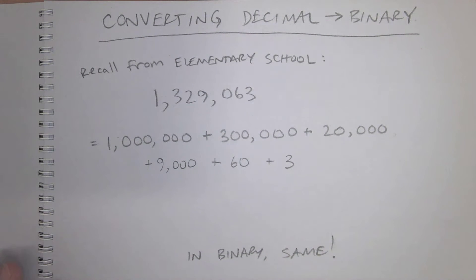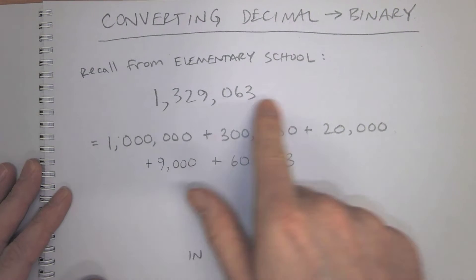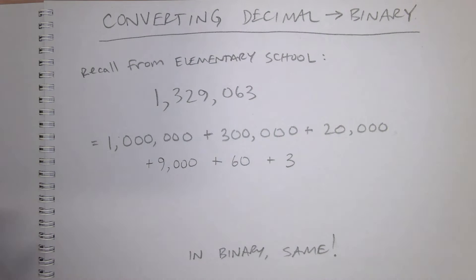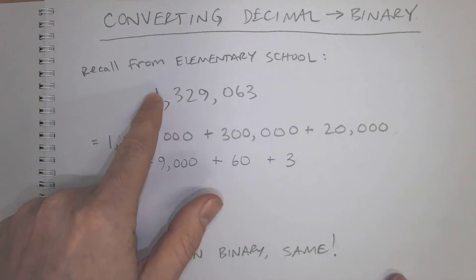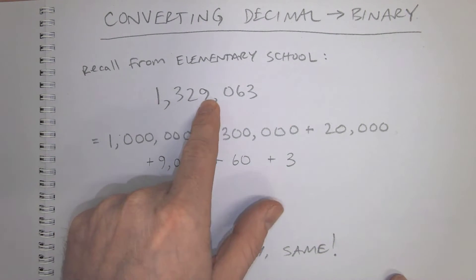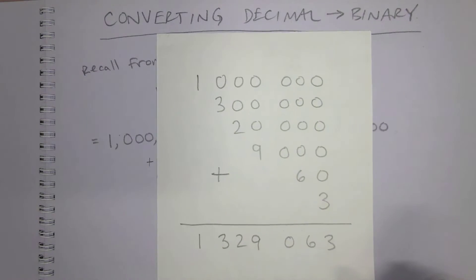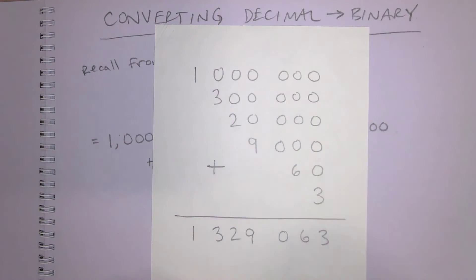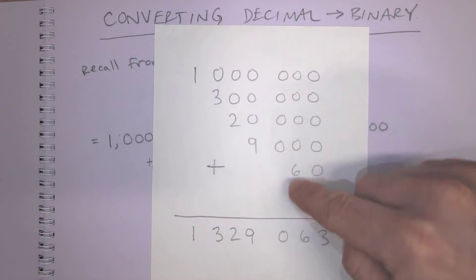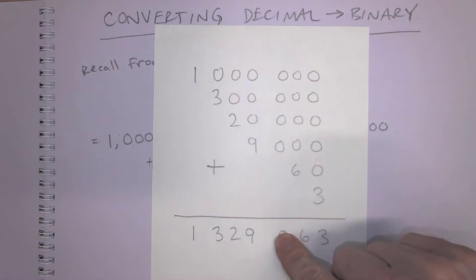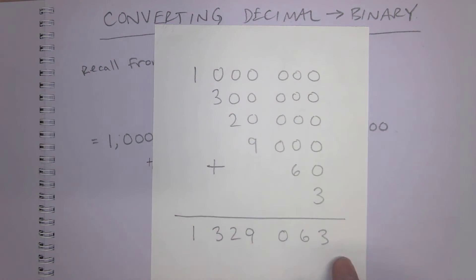To convert an IP address to binary, first you need to know how to convert decimal numbers to binary. Remember when you learned to count and they'd say here's a number like one million, three hundred twenty-nine thousand and sixty-three? You can express that as one million plus three hundred thousand plus twenty thousand plus nine thousand plus sixty plus three — you put them all on top of each other and add them up to get the number.